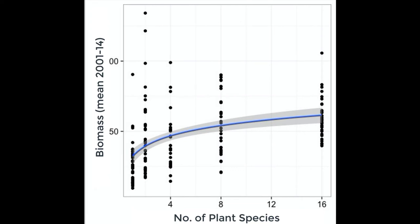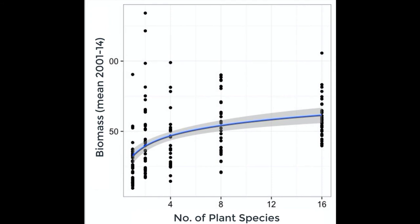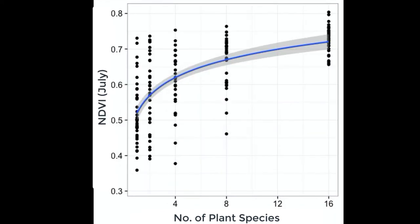Here I've plotted the number of plant species from zero to 16, and you can see a positive relationship with biomass — this is average plot-level biomass from 2001 to 2014. It's an iconic graph showing the more plant species you have, the more biomass you have in the plots. Then looking at NDVI values — average NDVI per plot from our imagery — we see that same positive relationship. It's really tracking productivity in the field.